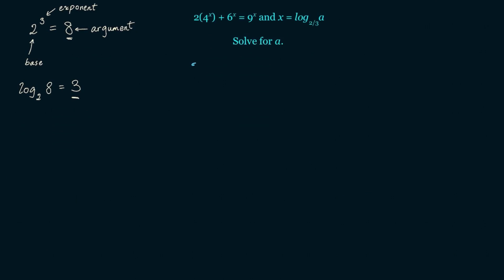Let's take our first equation: 2 times 4 to the x plus 6 to the x equals 9 to the x. And let's subtract 6 to the x from both sides, giving us 2 times 4 to the x equals 9 to the x minus 6 to the x.